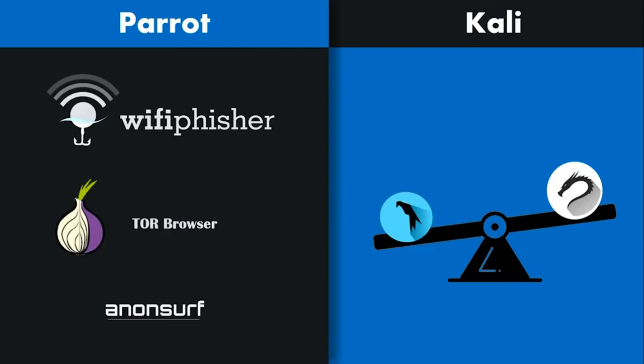Another tool appreciated on Parrot that is not seen on Kali is AnonSurf. Being anonymous for a hacker is the first step before hacking a system, and anonymizing a system in an ideal way is not an easy task. AnonSurf is pretty good as it uses Tor IP tables to anonymize the whole system. Also, Tor comes pre-installed on Parrot while it has to be externally installed on Kali. Wi-Fi Fisher, Tor Browser, and AnonSurf surely can be downloaded on Kali, but they don't come pre-installed, and that is what counts.